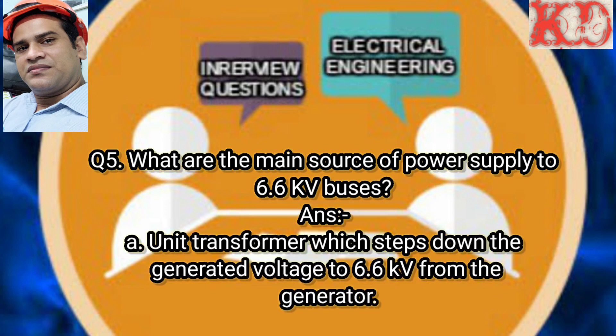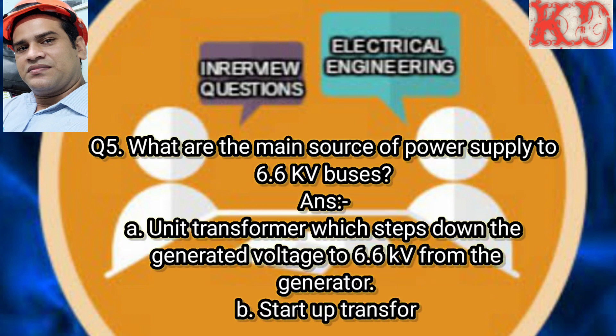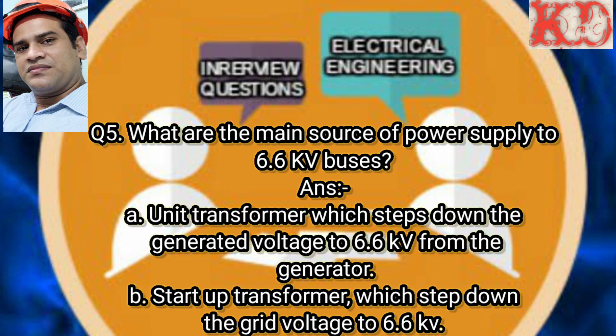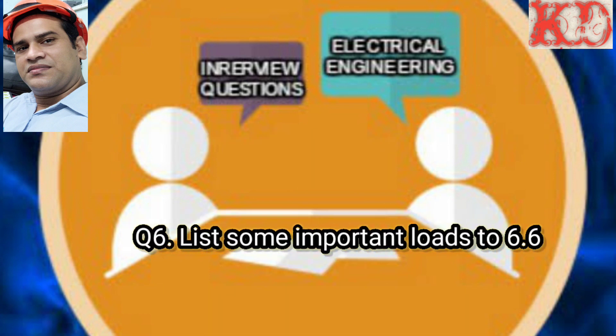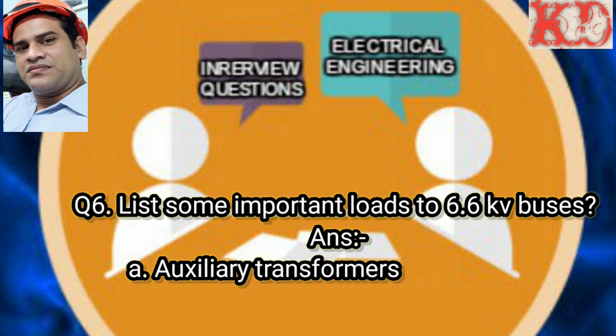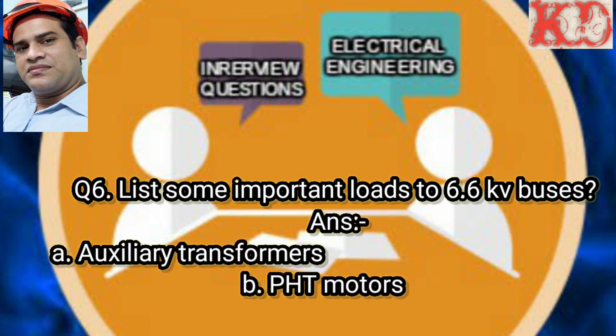Question number 5: What are the main sources of power supply to 6.6 KV buses? Answer: First, the unit transformer, which steps down the generated voltage to 6.6 KV from the generator. Second, the startup transformer, which steps down the grid voltage to 6.6 KV.